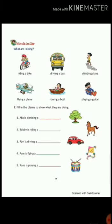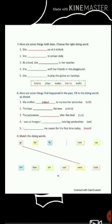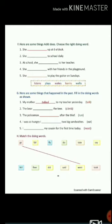Next is words in use. Here you have to identify the pictures given in front of each sentence and fill in the blanks to show what Aliyah, Bobby, Ravi, Pam and Rana are doing. In question number F, you have to choose the right doing words that are given in the box below and fill in the blanks.